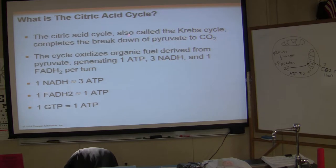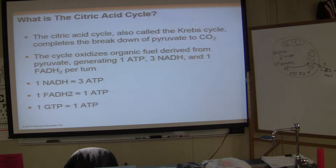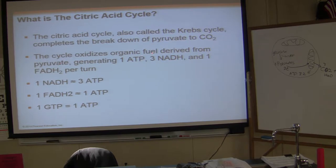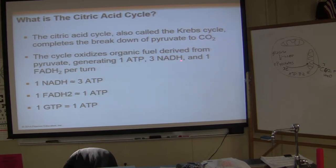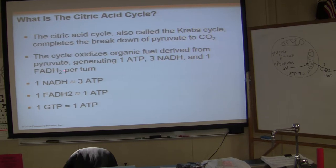So, what is the citric acid cycle? The citric acid cycle, also known as the Krebs cycle, completes the breakdown of pyruvate to carbon dioxide. The cycle oxidizes organic fuel derived from pyruvate, generating 1 ATP, 3 NADH, and 1 FADH per turn.